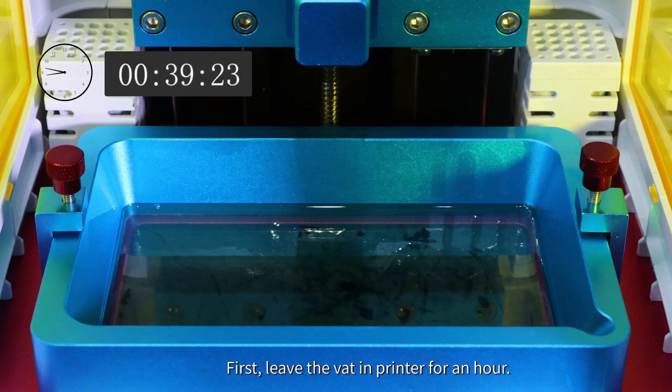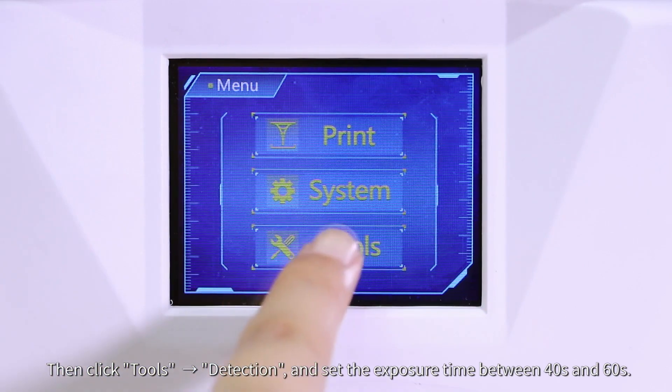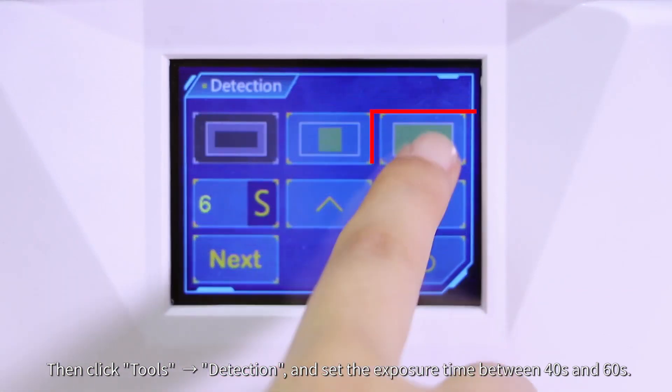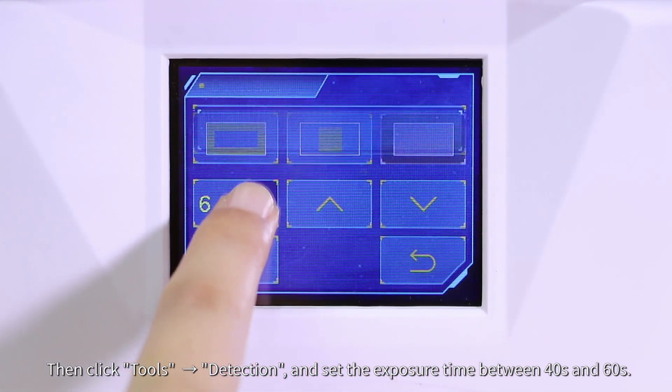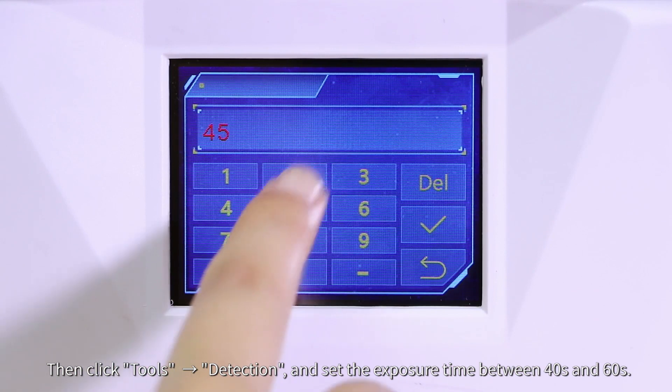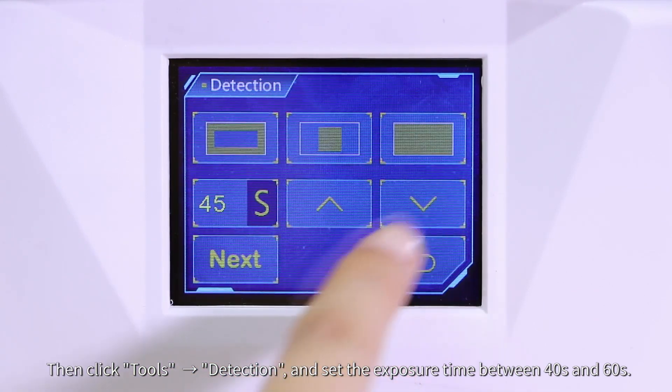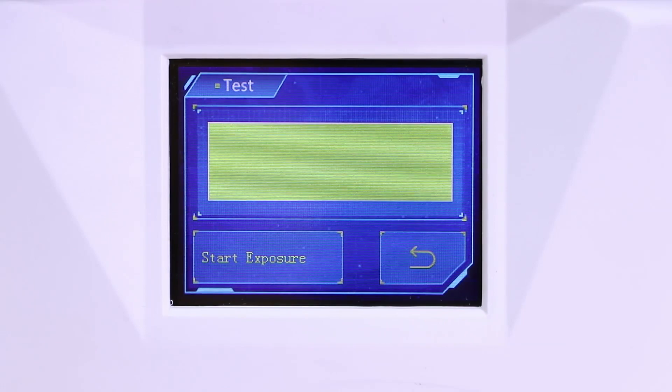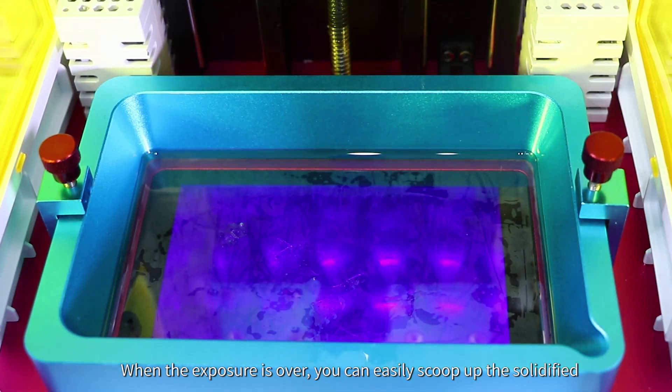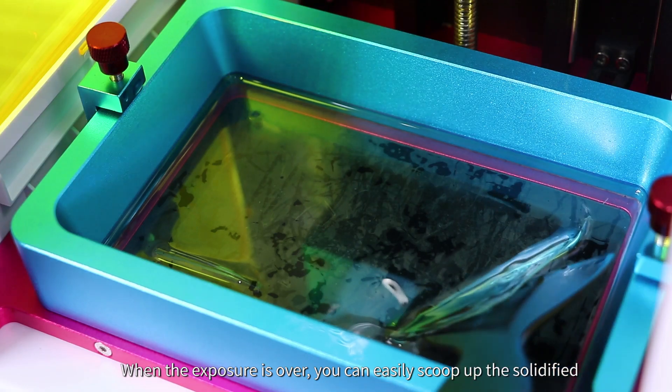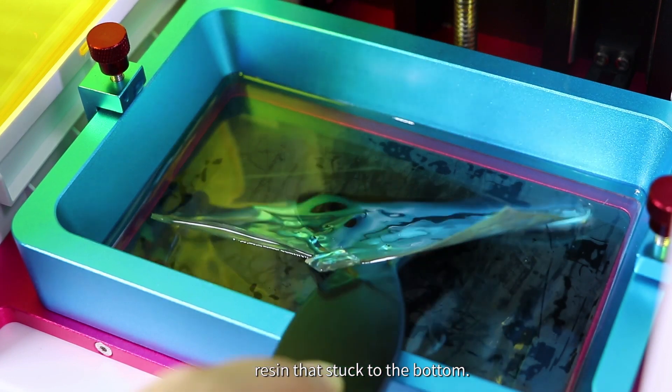First, leave the vat in printer for an hour. Then click Tools and Next Detection and set the exposure time between 40 seconds and 60 seconds. When the exposure is over, you can easily scoop up the solidified resin that stuck to the bottom.